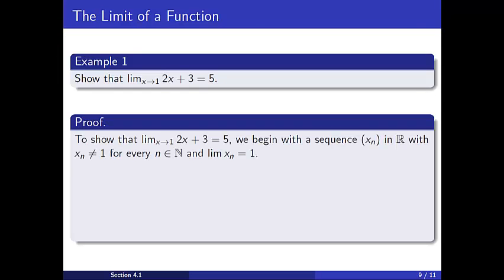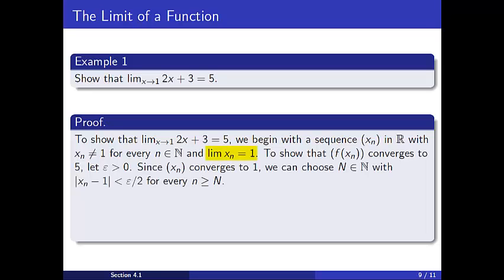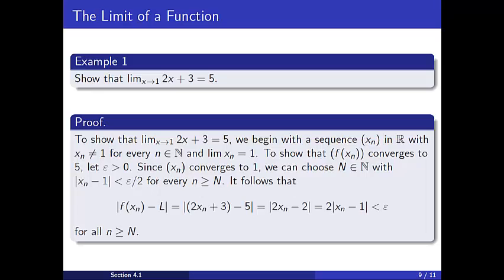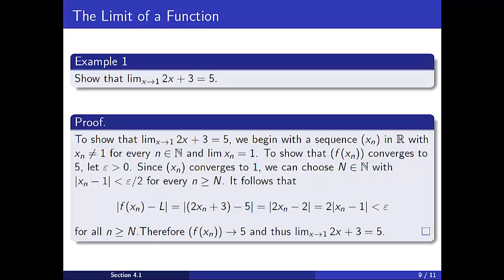Now for a formal proof. To show that the limit of 2x plus 3 as x approaches 1 is 5, we first let the sequence x sub n be an arbitrary sequence in R, with x sub n not equal to 1 for every n in the natural numbers, and the sequence x sub n converges to 1. Now, to show the range sequence f of x sub n converges to 5, we let epsilon be positive. Since the sequence x sub n converges to 1, there exists a natural number capital N such that the absolute value of x sub n minus 1 is less than epsilon divided by 2, for all n greater than or equal to capital N. For all such n, we have through direct calculation that the absolute value of f of x sub n minus L is less than epsilon. Therefore, the sequence f of x sub n converges to 5. And thus, by the definition, the limit of 2x plus 3 as x approaches 1 is 5, completing the proof.